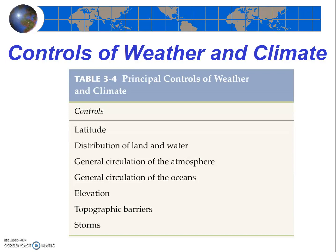If I asked you to name somewhere warm on Earth, you'd probably name somewhere near the equator. If I asked you to name somewhere cold, you'd likely name the North Pole or Antarctica, somewhere very far from the equator. Notably, latitude also affects pressure, wind, and moisture content, and we'll study this later in the course.